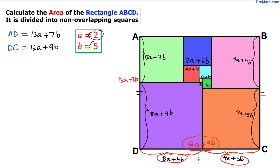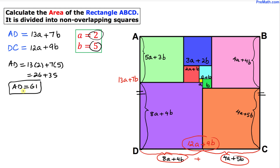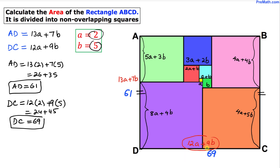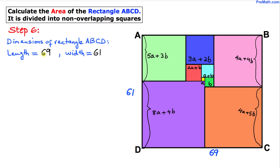Now we replace a with 2 and b with 5. So AD is 13 times 2 plus 7 times 5, which is 26 plus 35, giving AD equal to 61. And DC is 12 times 2 plus 9 times 5, which is 24 plus 45, giving DC equal to 69. So our side lengths turned out to be 61 and 69 — the length of the rectangle is 69 and the width is 61.